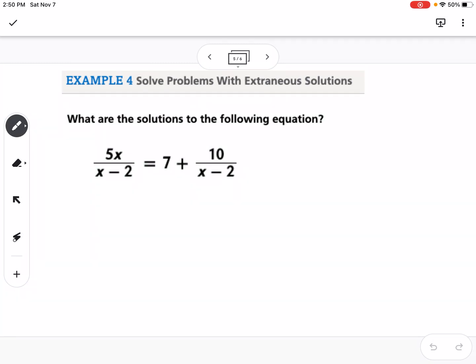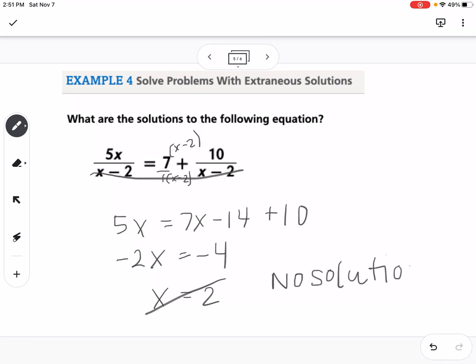So this one, we want to get all the denominators the same, so 7 is not written as a fraction, but we know it's just 7 over 1. So the common denominator here would be x minus 2, so I'm going to multiply this top and bottom by x minus 2. Then we can cross off the denominator, and we have 5x equals 7x minus 14 plus 10. So that would be, if we get the x's on one side, this would be negative 2x equals negative 4, or x equals 2. We can tell by this problem, if I were to plug in 2, it would cause a problem, it would cause us to divide by 0. So 2 is not a solution. It's extraneous. So that means our answer would be no solution.